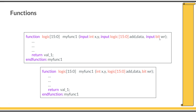Usually in a function you will use only inputs, and very rarely output variables. After the function body you need to specify a return statement. The return statement ends function execution — whenever it is encountered, it immediately exits the function and returns to the calling place. If you are returning a value, that value is returned to the caller. The return type must match the return type specified in the function definition, which here is 'logic [15:0]'.